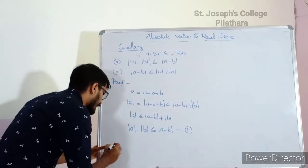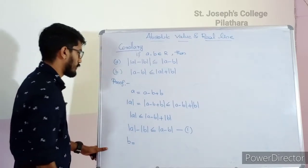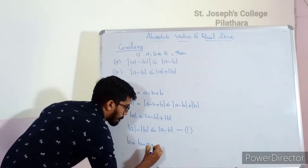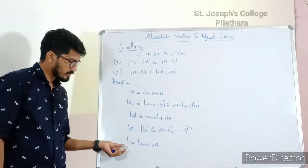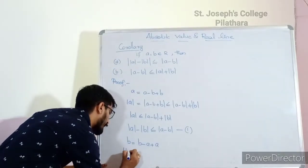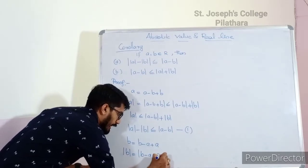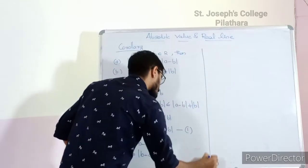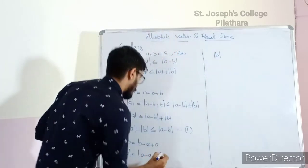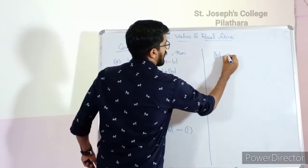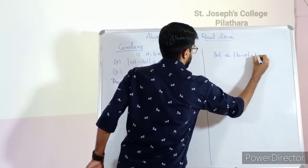Similarly, write b = (b − a) + a. Again, applying the triangle inequality, we get |b| ≤ |b − a| + |a|.